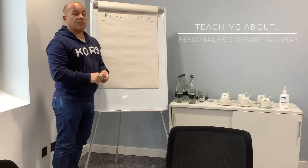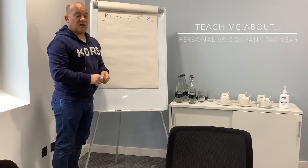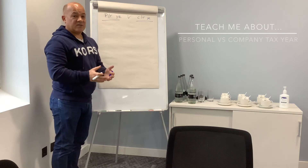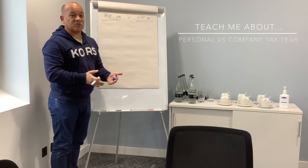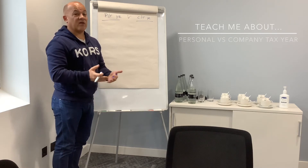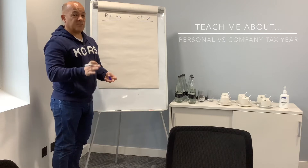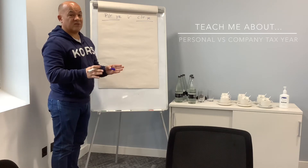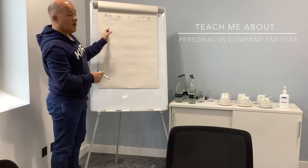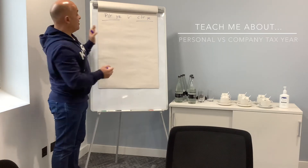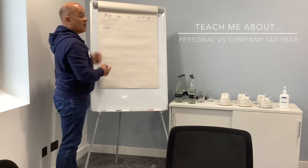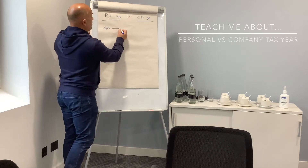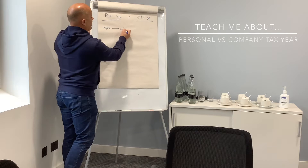Personal tax year and company tax year. If you've got a limited company, often people get confused with the blurring of the lines between your own personal tax year and the company tax year. So let's just explain the two different dates that we're looking at. The personal tax year runs from the 6th of April every year and runs all the way through to the 5th of April.